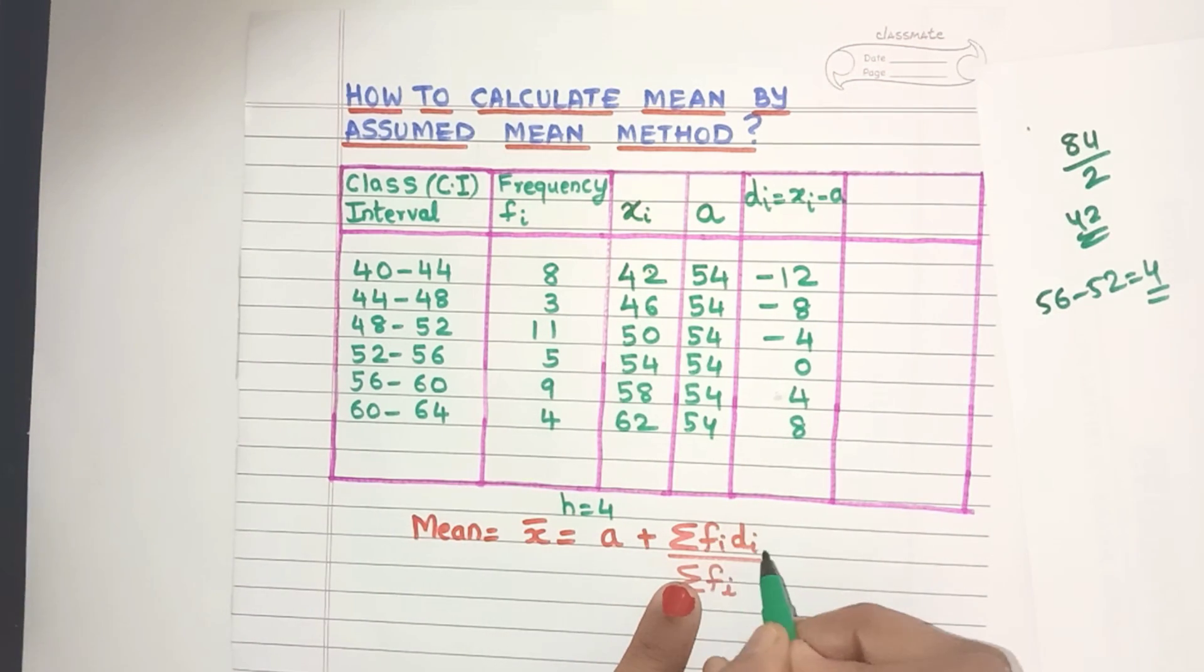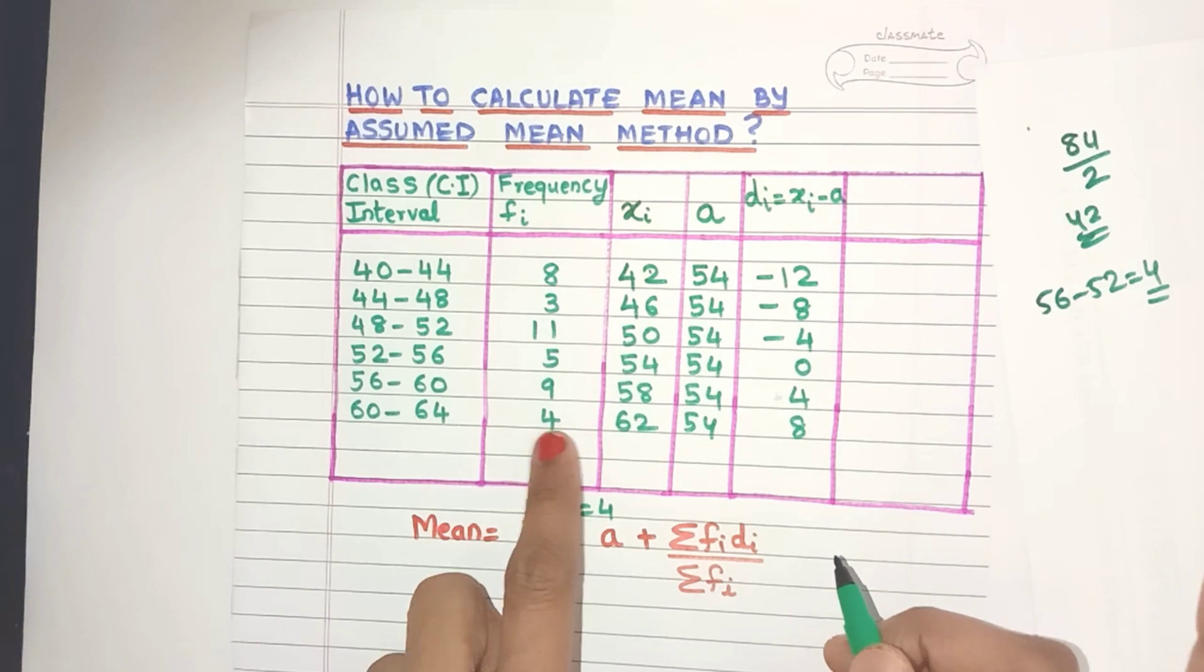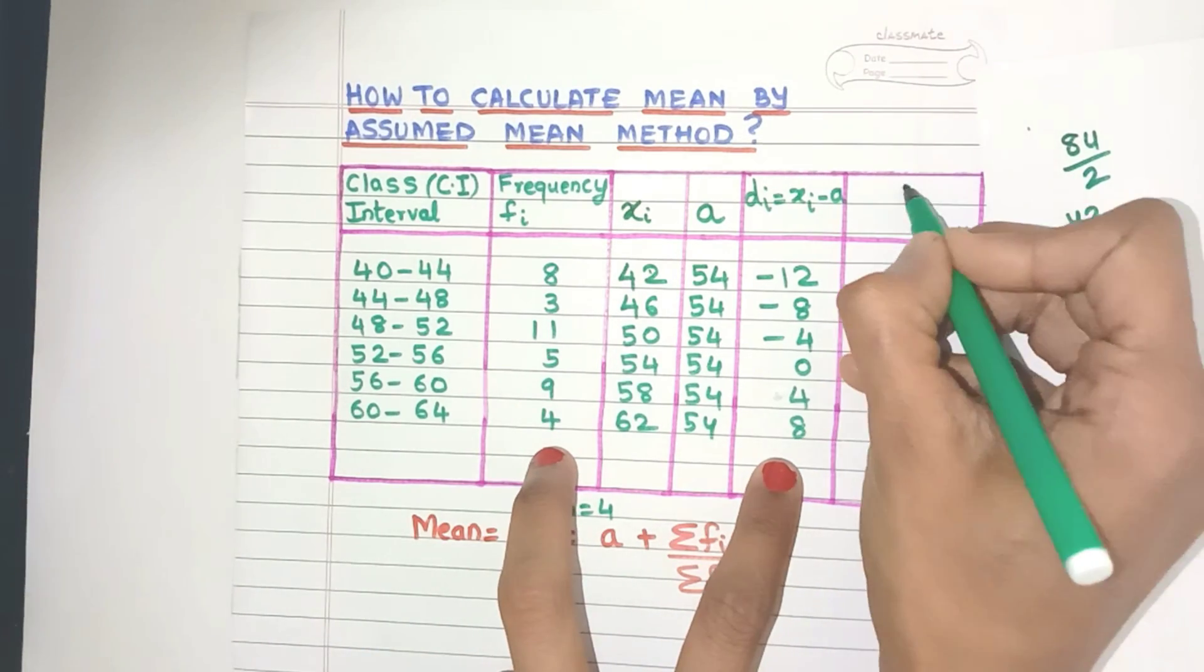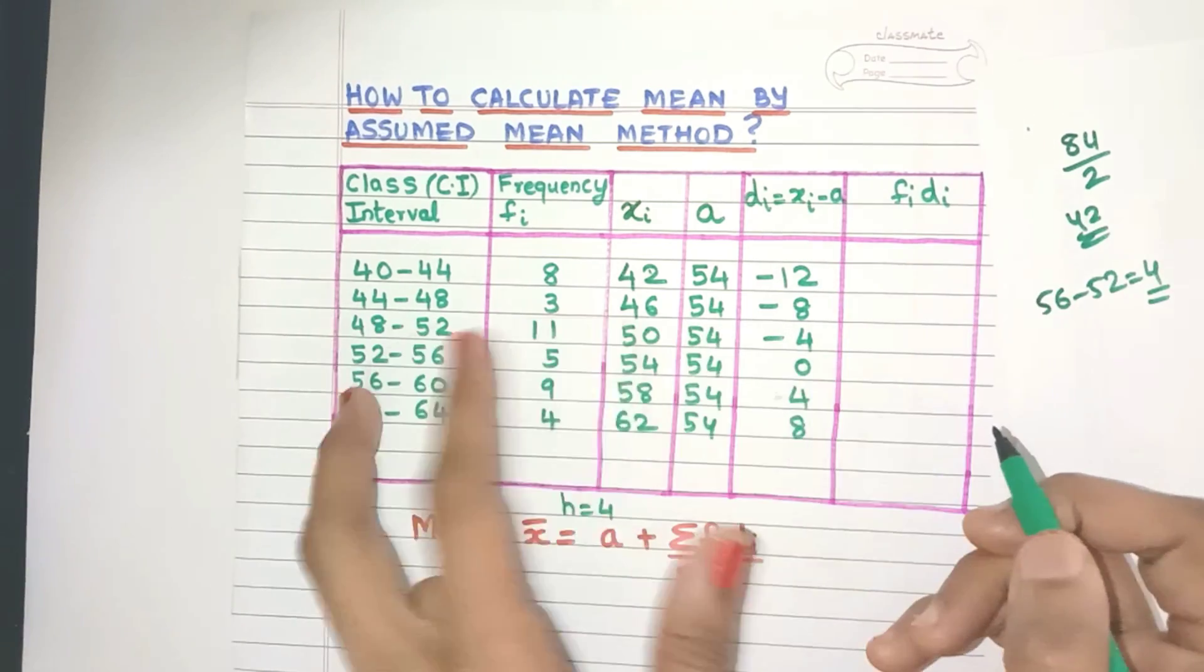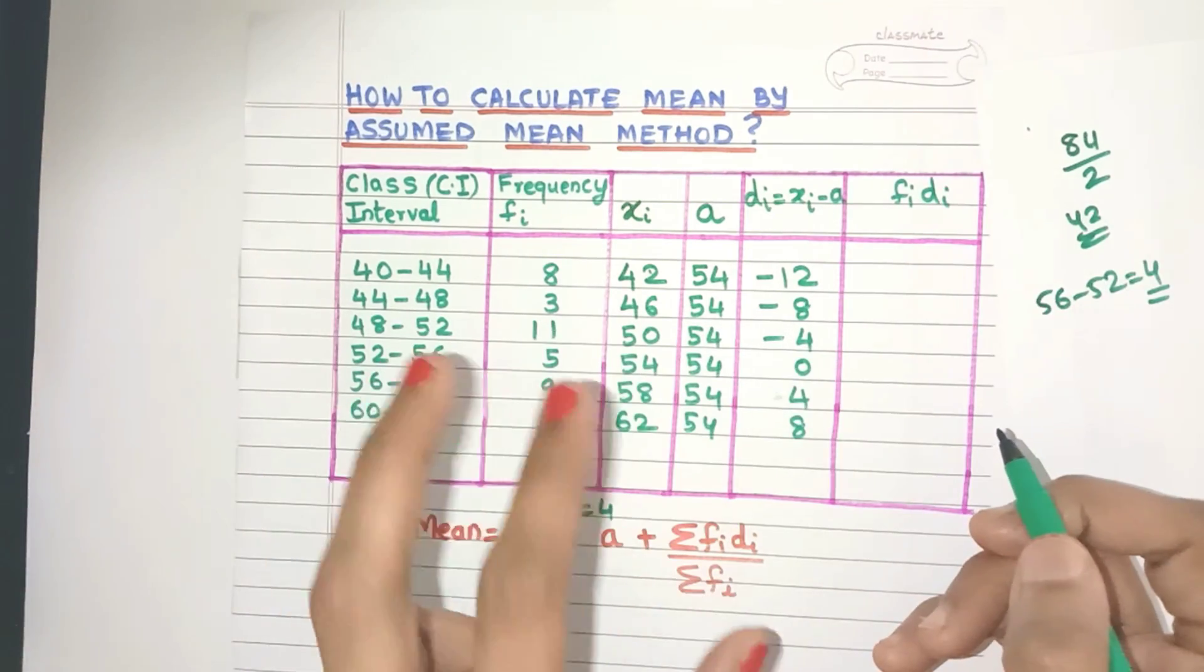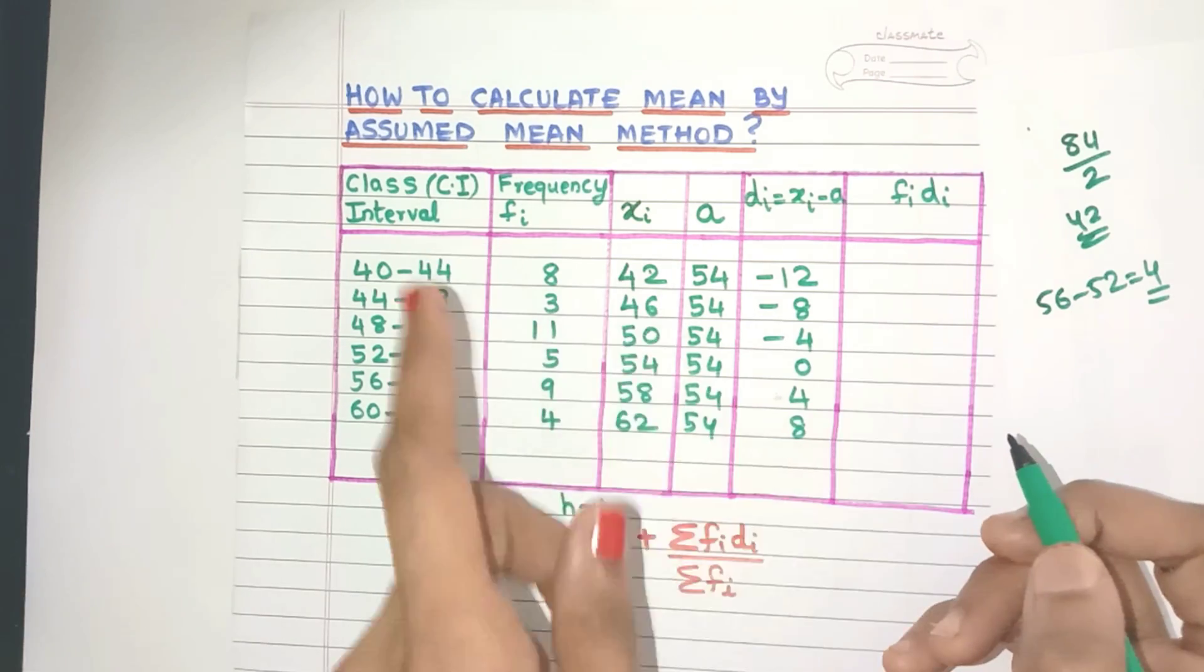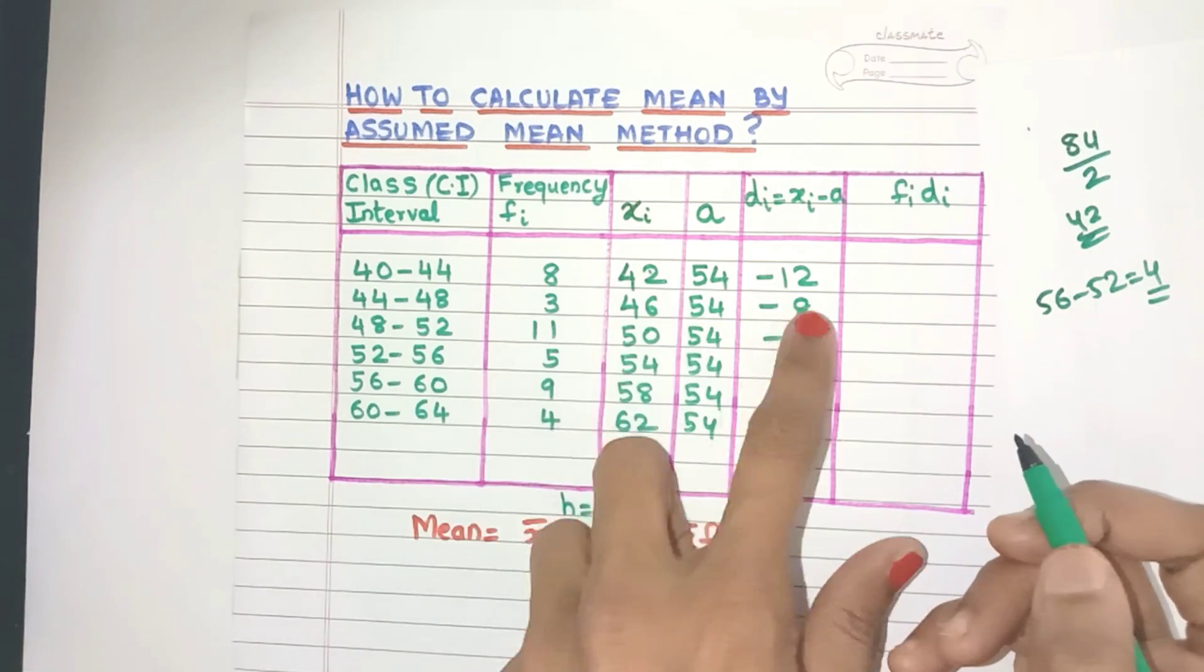Again, come back to the formula. It's written here fi into DI. That means now I need to multiply fi with the DI. So that is our next column. See, fi, DI. Just to make sure that you don't mix up the column, friends. It's better that you just point your fingers to the correct column and then do the multiplication.